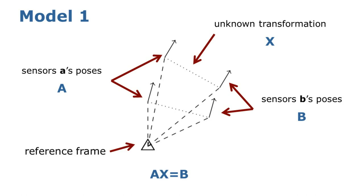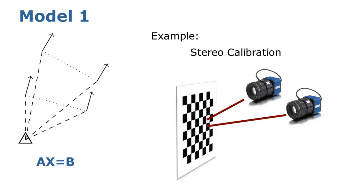This is easy and straightforward in this model, all because there is a reference frame common to both sensors. A typical example for this model is regular stereo camera calibration, where both cameras look at a checkerboard, and that checkerboard provides us a common reference frame.